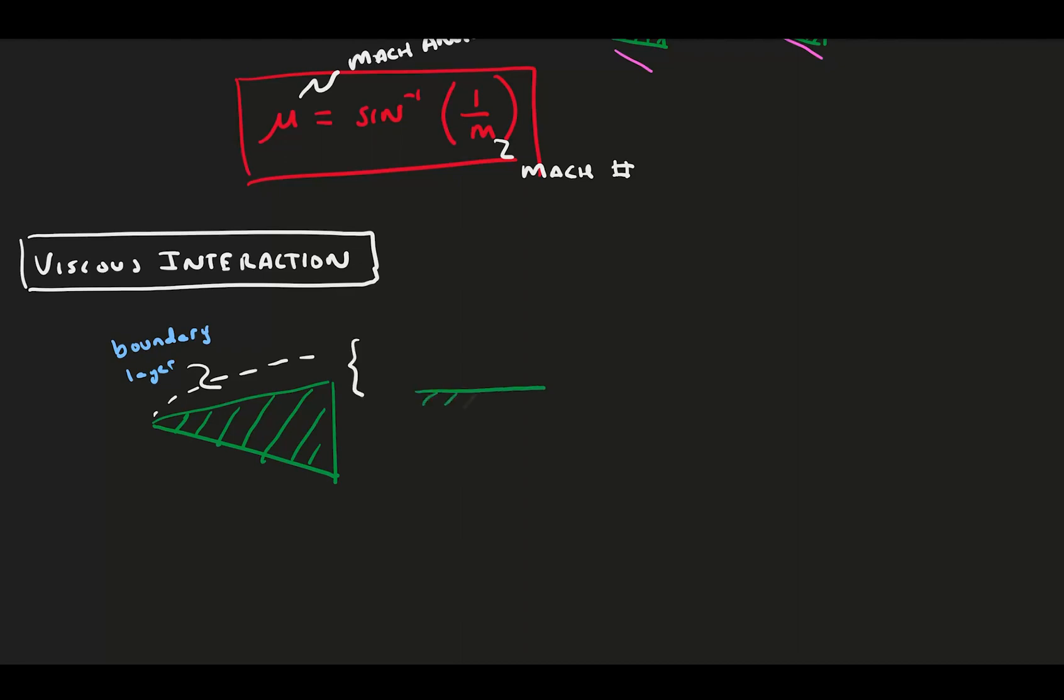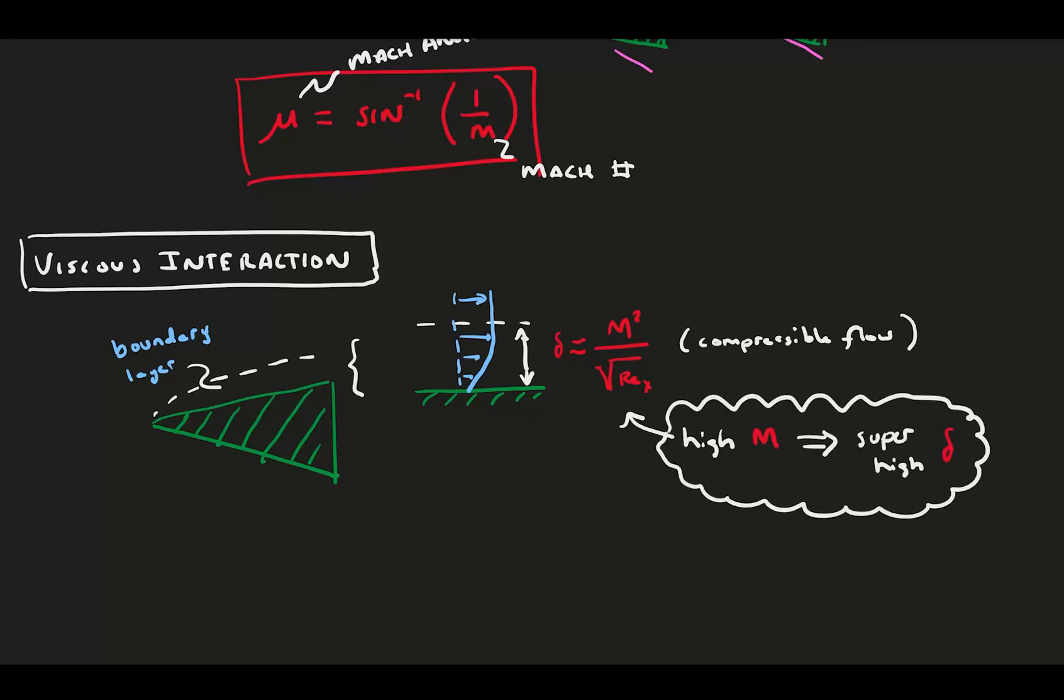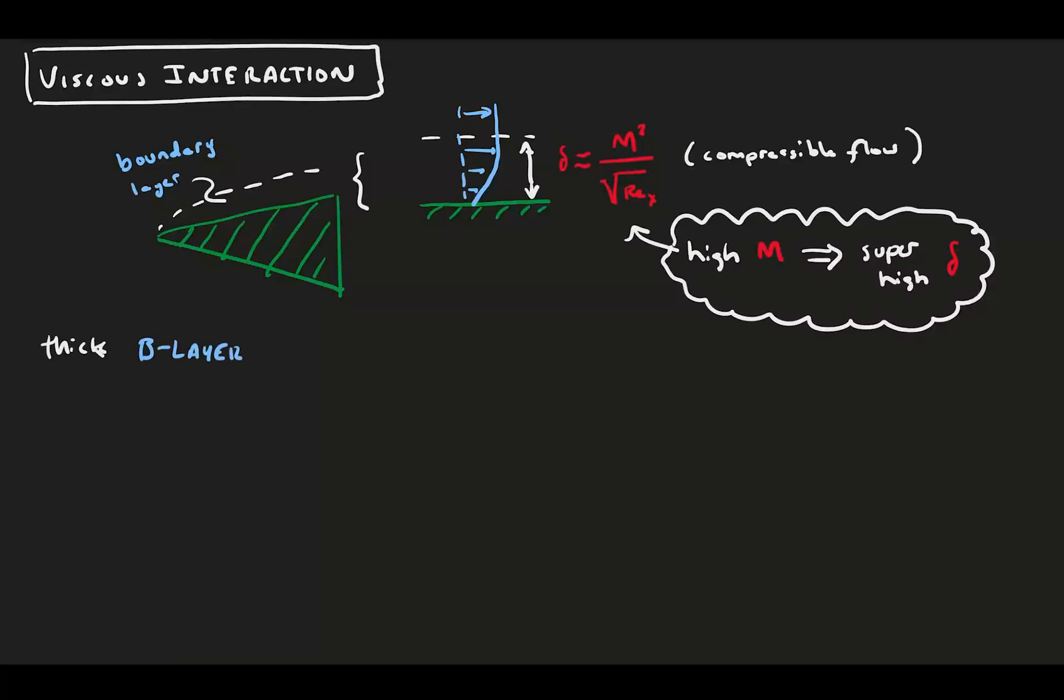Recall the boundary layer has a height that grows as it develops along the boundary. It has been shown for compressible flow that the boundary layer growth goes as the Mach number's square divided by the square root of the Reynolds number. Going to higher Mach numbers dramatically increases the thickness of the boundary layer. This thick boundary layer leads to a number of interesting effects.